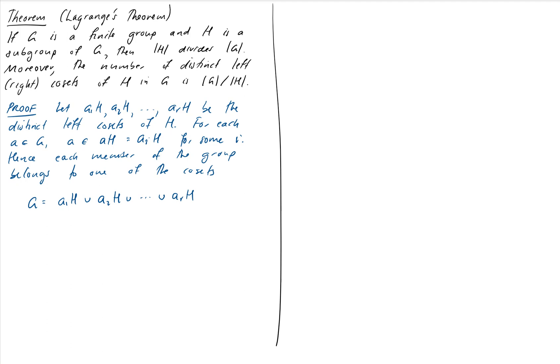So G is therefore the union of all of those cosets, and we know the union is disjoint. That was one of our coset properties. What that means is that the order of the group is therefore the sum of all of those orders: order of A1H plus order of A2H plus order of ARH.